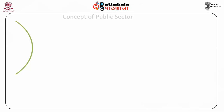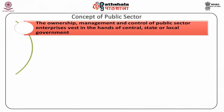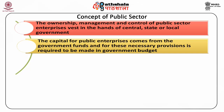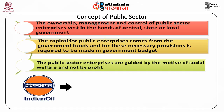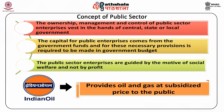Let us throw some light on the basic characteristics of public enterprises. First, the ownership, management, and control of public sector enterprises rest in the hands of central, state, or local government. Second, the capital for public enterprises comes from the government funds and necessary provisions are required to be made in the government budget. Third, the public sector enterprises are guided by the motive of social welfare and not by profit. For example, Indian Oil Corporation, a public sector enterprise, provides oil and gas at subsidized prices to the public.